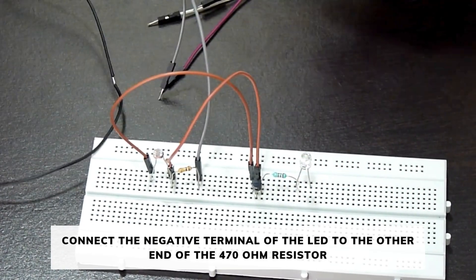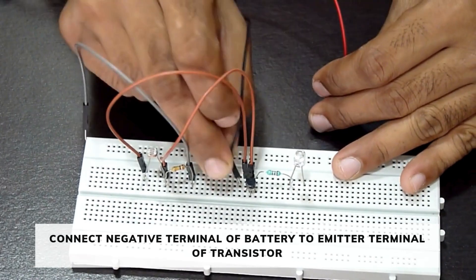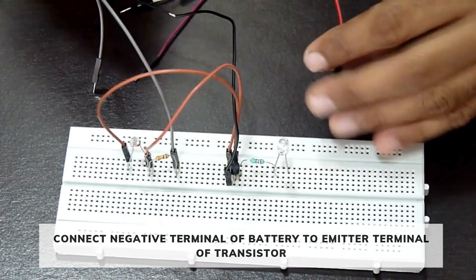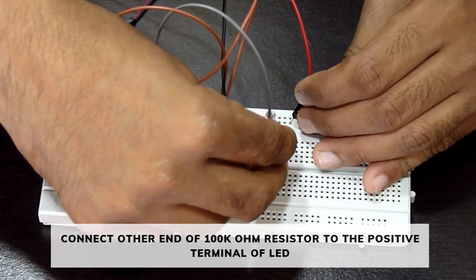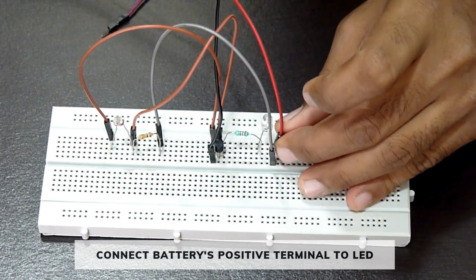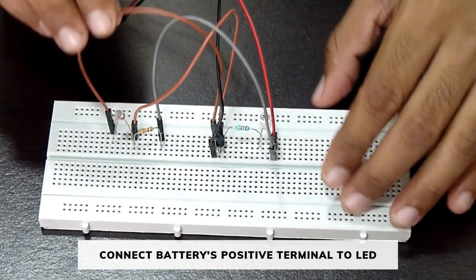Connect the negative terminal of the battery to the emitter terminal of the transistor. Connect the other end of the 100 kilohm resistor to the positive terminal of the LED. Connect the battery's positive terminal also to the LED.